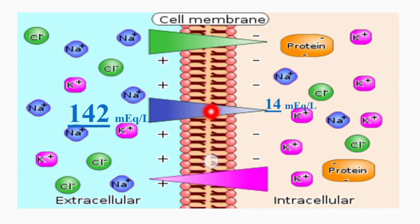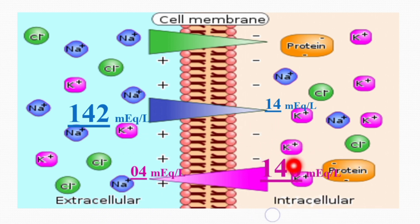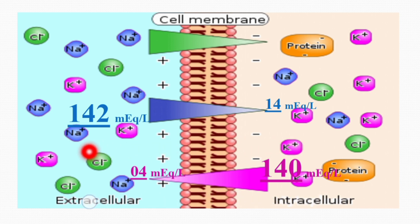Similarly, potassium ions are less on the outside and much more on the inside, so along the concentration gradient potassium ions will tend to move from inside to outside. The potential which develops on this membrane due to diffusion of these potassium ions is called the potassium diffusion potential.